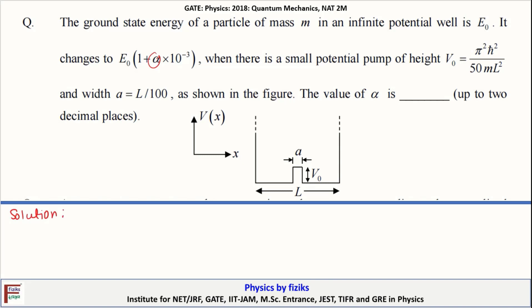Let us define the limits for the system. Taking the origin from the middle, this distance will be A/2 and this will be A/2. So the coordinates will be L/2 minus A/2, and the distance from the origin will be L/2 plus A/2. Let us define these as X1 and X2.